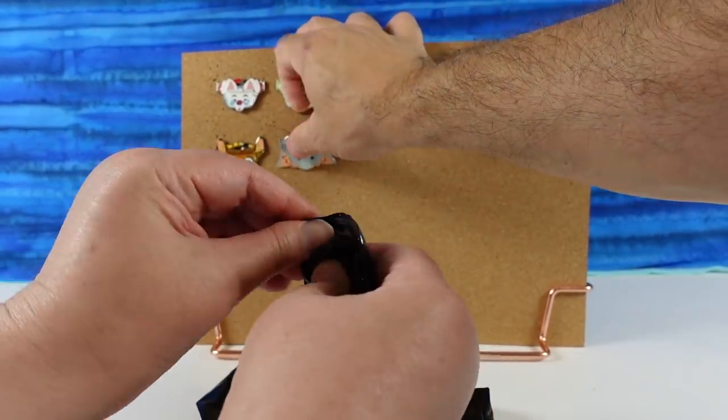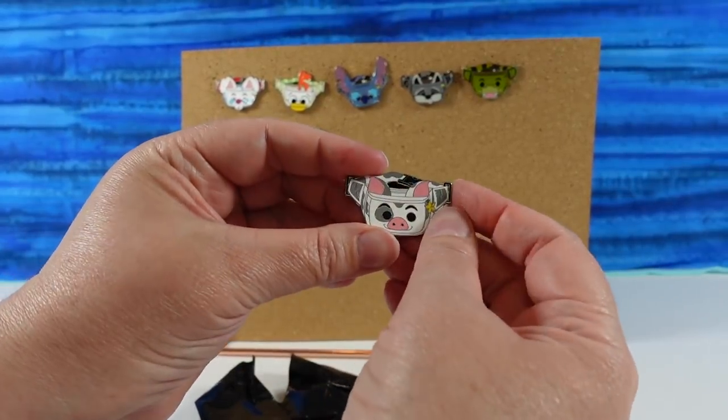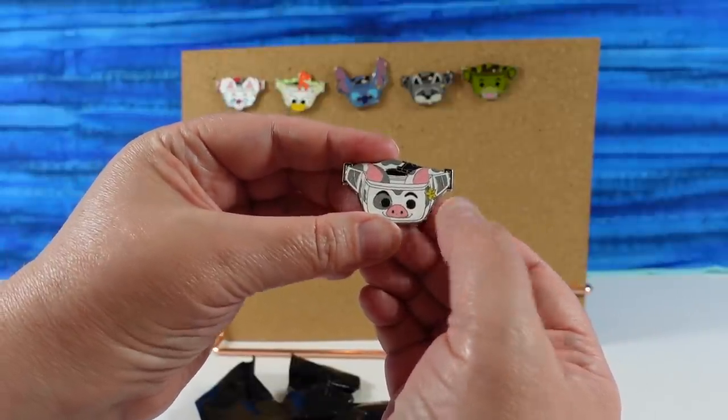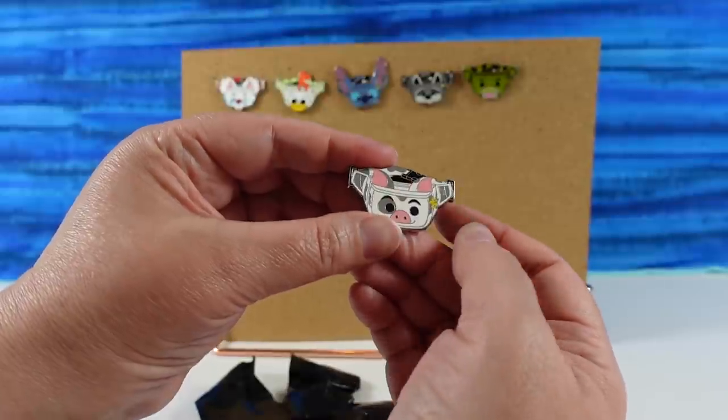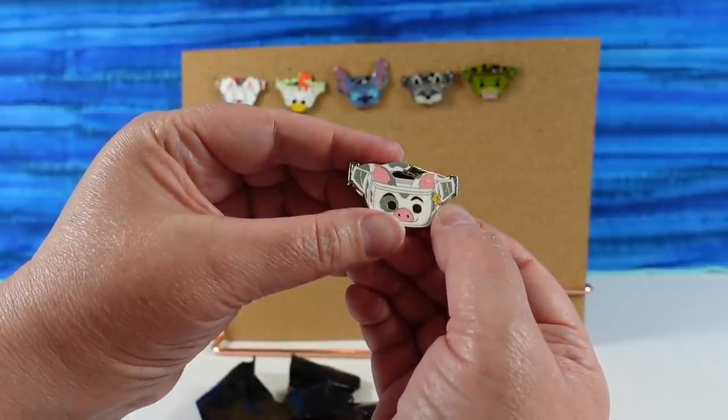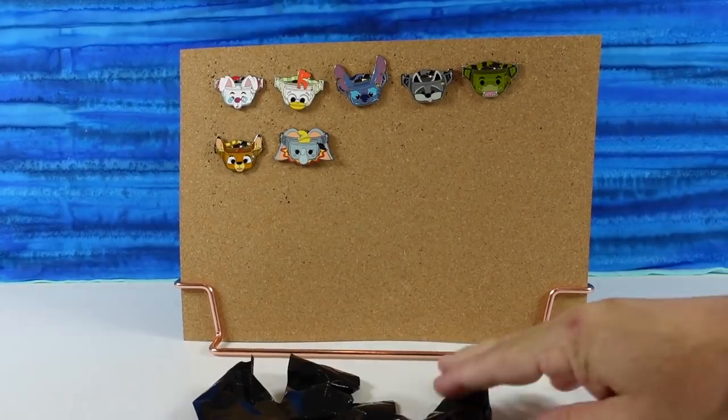This one doesn't want to open. There we go. We have, oh, Pua from Moana. So Pua is really cute. Oh, I would like a Kakamora one. That'd be a tough one though because it'd be round. You'd need like a trio of Kakamoras because then I could go. Pua is adorable.